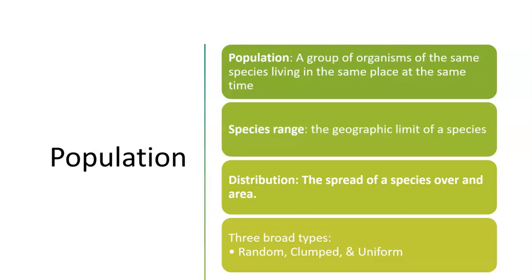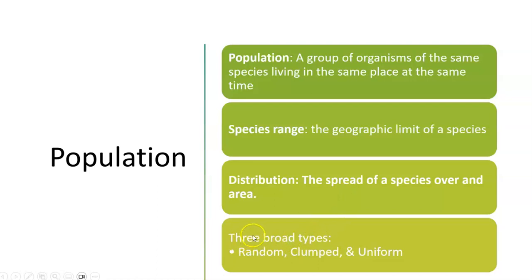Population — there are four main things here. You want to know the definition of population, and you're going to want to know species range, which is the limit of where a species can be found. For example, humans have a global species range. You're also going to want to know what distribution is — the spread of the species over an area. And you're going to want to know the three broad types of distribution: random, clumped, and uniform, and what makes those happen as well as what makes them different.